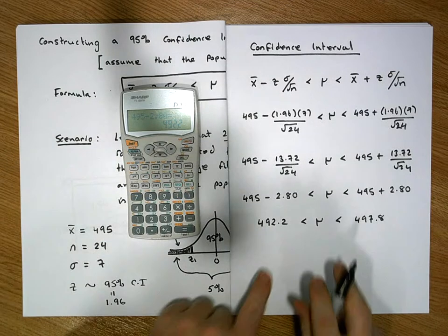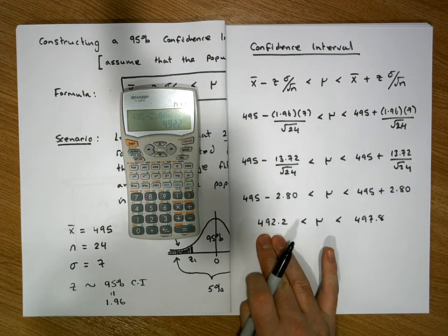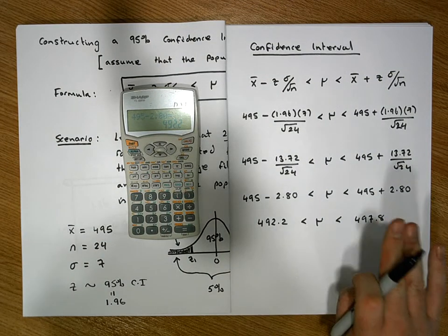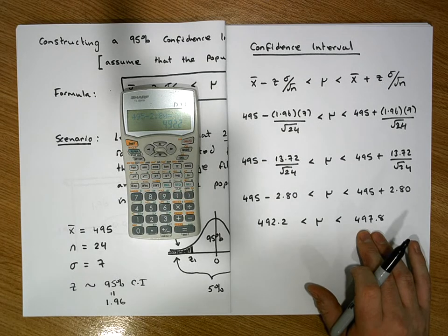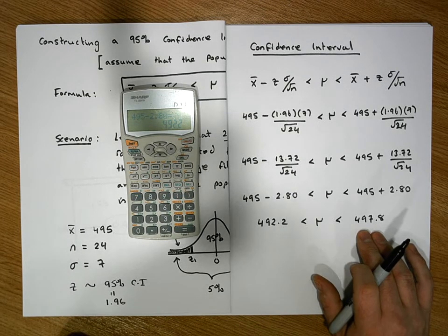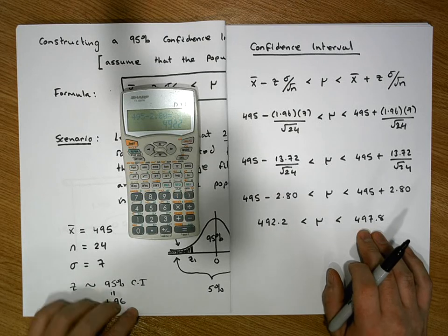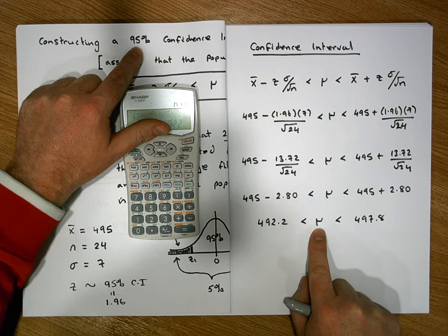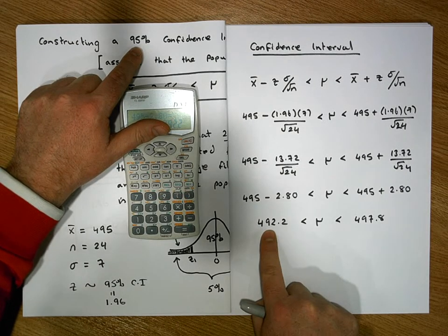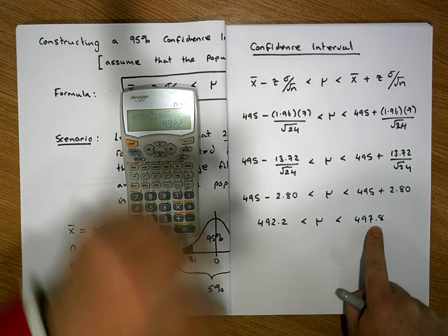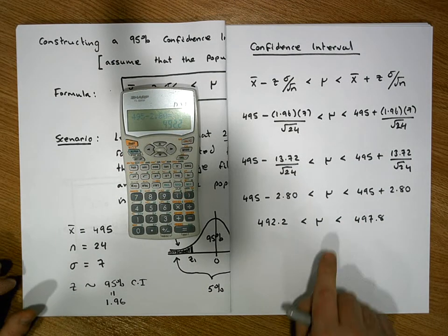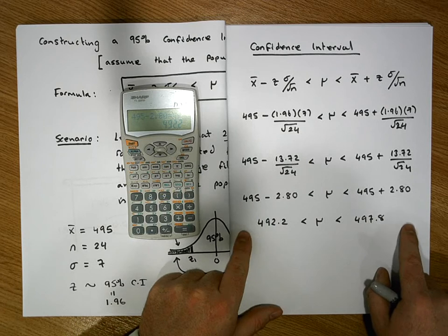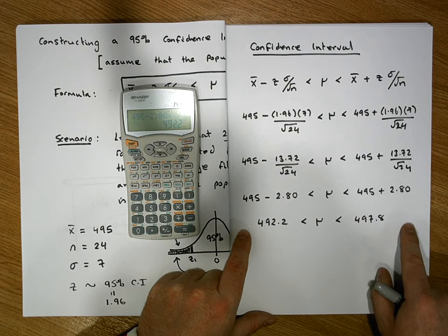This is our interval. The lower bound is 492.2 mils and the upper bound is 497.8 mils. We are 95% confident that the true population mean — in other words, the true average fill of these cans — should be between 492.2 mils and 497.8 mils. But we might be wrong; the true population mean might reside outside these bounds, but this should only happen approximately 5% of the time.